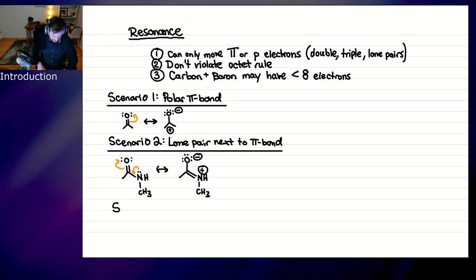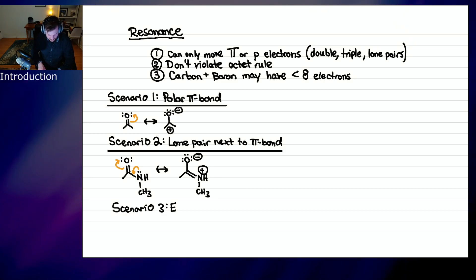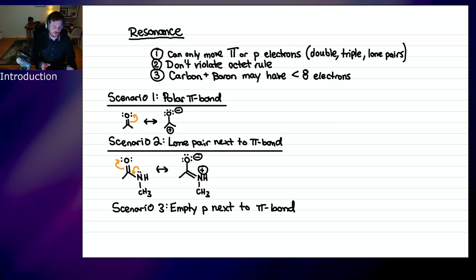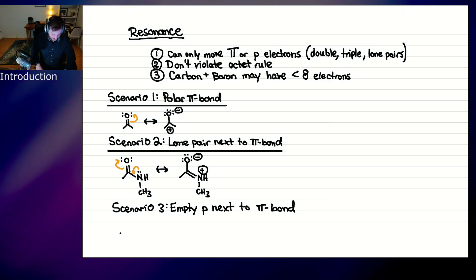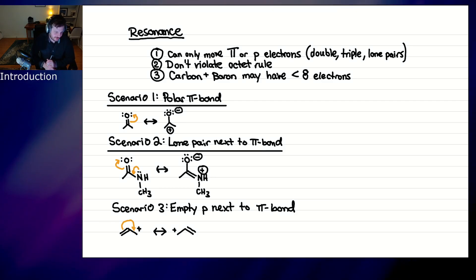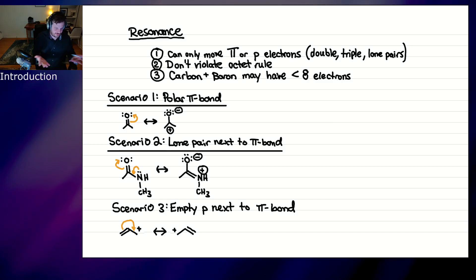Scenario three is empty P orbital next to pi bond. An empty P orbital in this class is essentially a carbocation. A pi bond next to a carbocation can shift over into the empty P orbital, moving the positive charge to the other side. Conservation of charge applies — you don't have to put the plus charges in a circle, but it's acceptable either way.